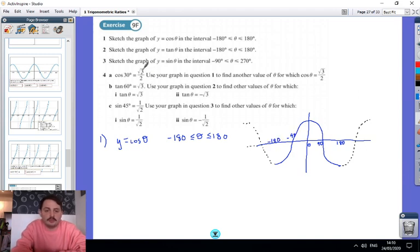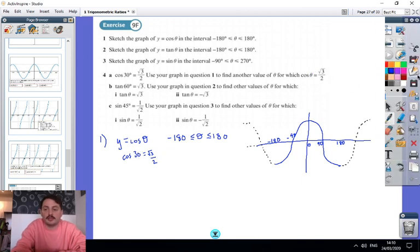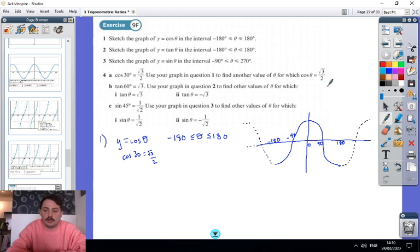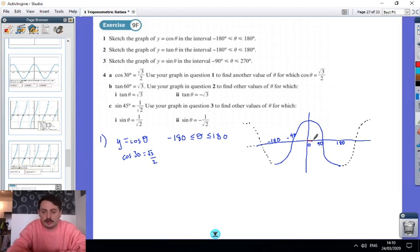So I'm just going to skip 2 and 3, because 4a actually uses that. It says that cos of 30 is equal to √3/2. And we want to use that graph to find another value for which cos of θ is √3/2. So one of the values is 30. So that means if I look at my graph, if I go 30 along from here, I will get a value, which this bit here, I can't really write it in there, is √3/2.